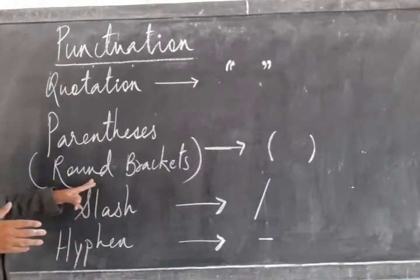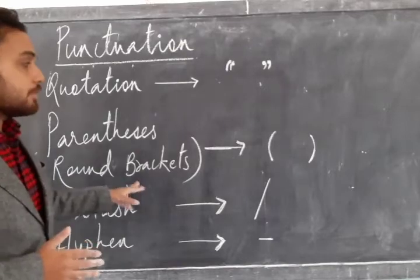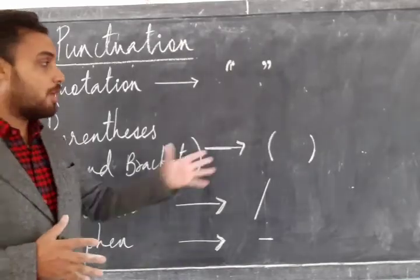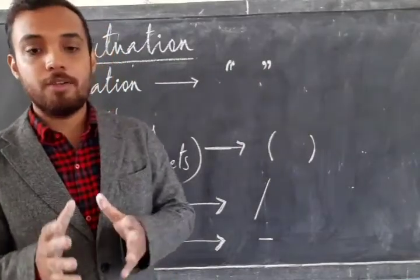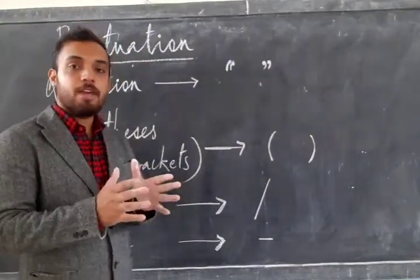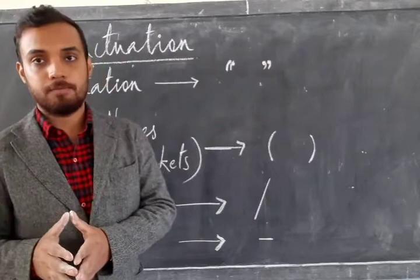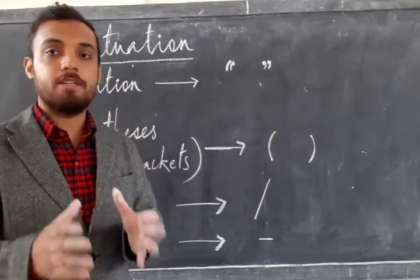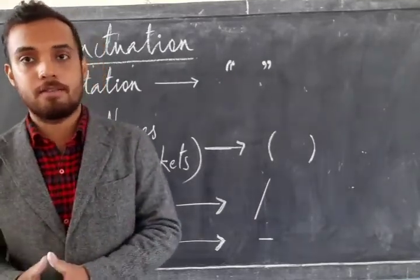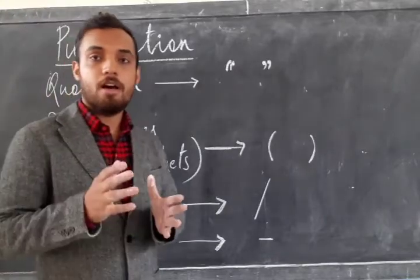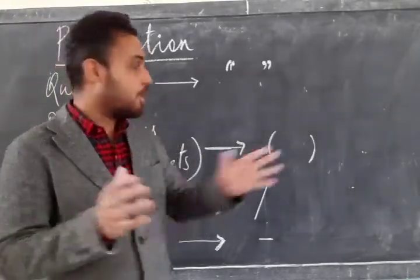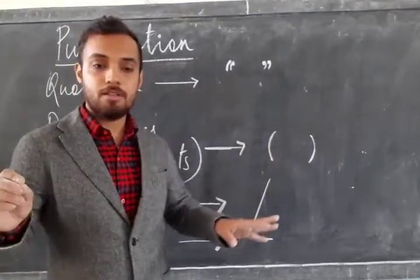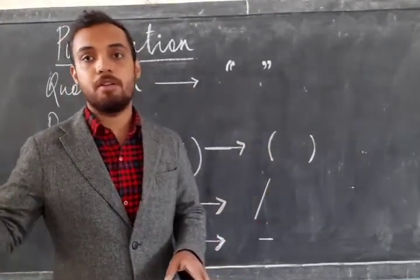Then we have parentheses or we can also call it as round brackets. Why are round brackets used? Round brackets are used to give extra information, providing with an extra information in a sentence. Example: I love visiting James. Now I open the bracket and write, he is my best friend, close the bracket.